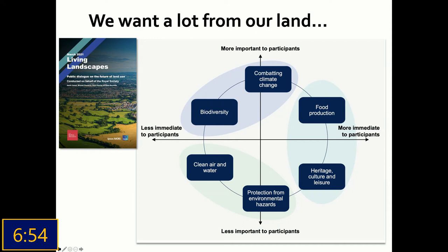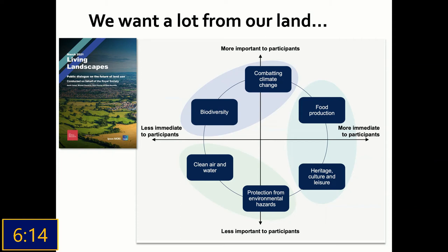This slide is taken from a report commissioned by the Royal Society — an Ipsos MORI public dialogue on the future of land use. You can see it's set up in terms of more important versus less important, and less immediate versus more immediate. Top of the most important and most immediate is combating climate change, but also up there are things like biodiversity and food production. And an area closest to my research is clean air and water in terms of what we want from land.